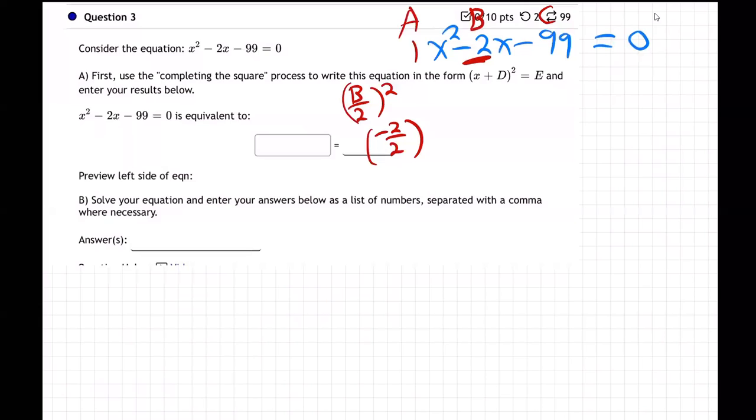Right, my b is negative 2 right here, over 2 quantity squared, which is negative 1 squared, which is negative 1 times negative 1, which is positive 1. Okay, so what do I do with that? Well, then I take the x squared minus 2x, and that positive 1 that I just found, I put it right next to the 2x.